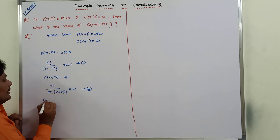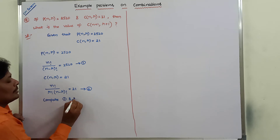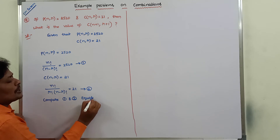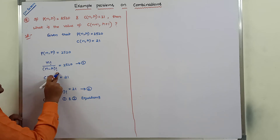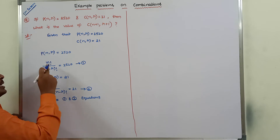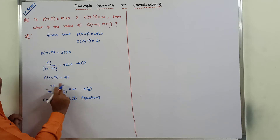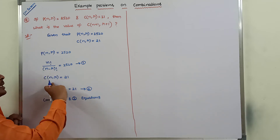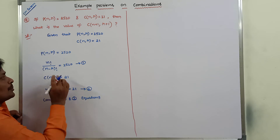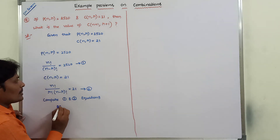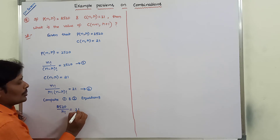Now compare equations 1 and 2. Observe that n factorial divided by (n minus r) factorial equals 2520 from equation 1, and that same expression appears in equation 2. Substituting equation 1 into equation 2, we get 2520 divided by r factorial equals 21.